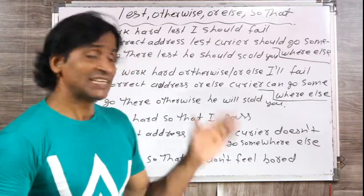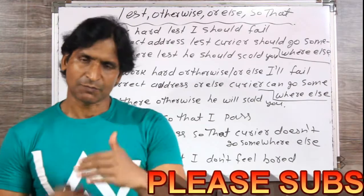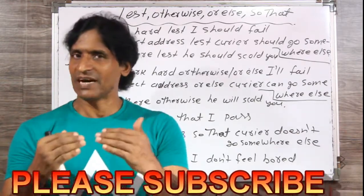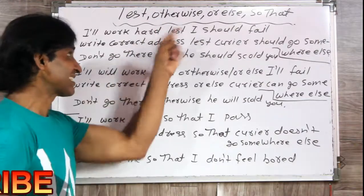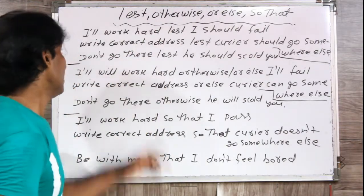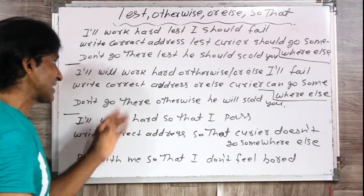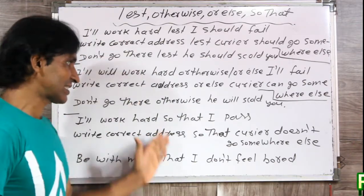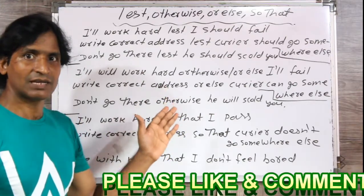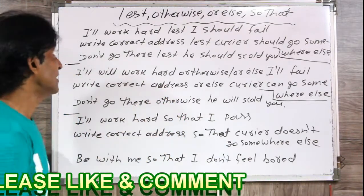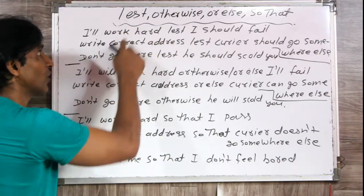Friends, many sentences are written here; you just need to understand them — I will explain everything. Just watch carefully and you will understand everything. Lest, otherwise, or else, and so that — the first three sentences are for 'lest'.